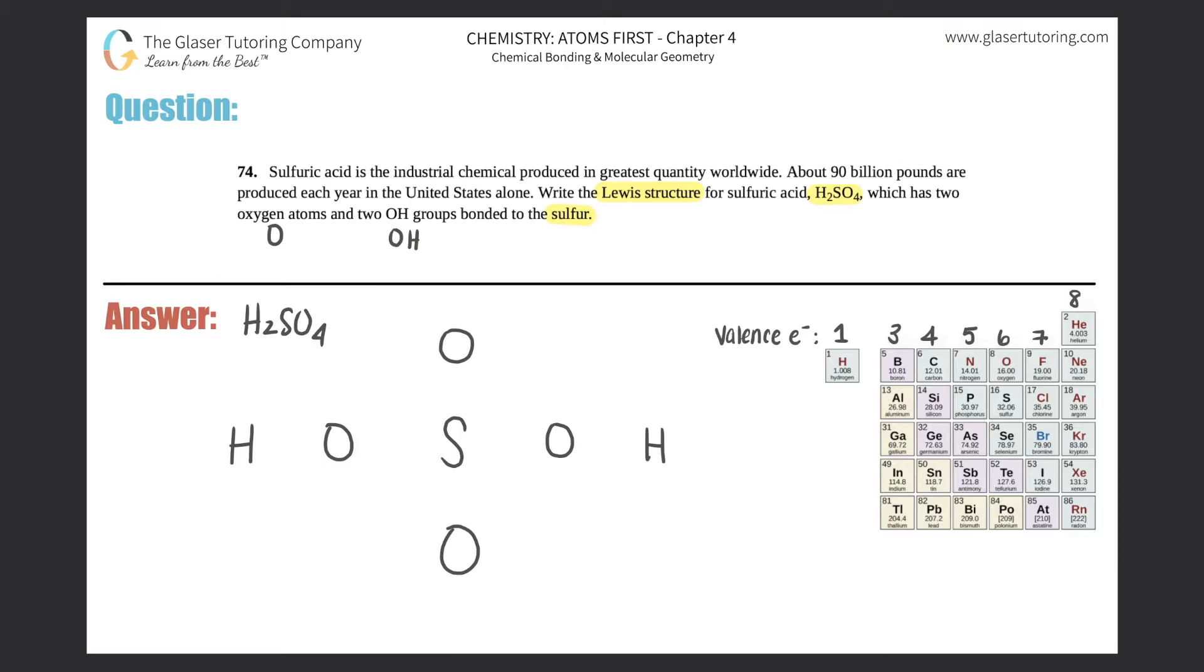Now, remember, if you guys know my foolproof Lewis structure method, we have the backbone. And now we just have to apply the valence electrons. So sulfur has six valence electrons. So six dots we're going to place around sulfur. Oxygen also has six. So we're going to put six dots around oxygen. And hydrogen has one. So we put one dot around hydrogen.